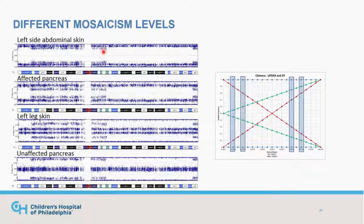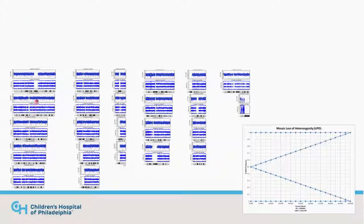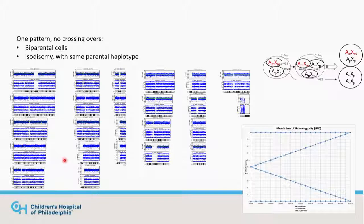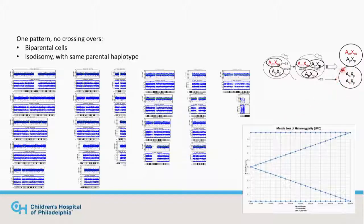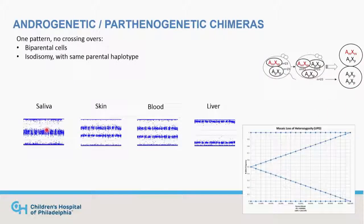This is consistent with a normal biparental cell line and a second sperm that, due to random centromere distribution, is an isodisomy — an androgenetic chimera due to genome-wide isodisomy. Looking at this same person across various tissues all at different percents, we can see a high UPD cell line and how the pattern changes to a low UPD cell line. The most common case we've seen is where every chromosome looks identical, with no evidence of crossing over — just copy-neutral loss of heterozygosity for the whole genome, looking like UPD.